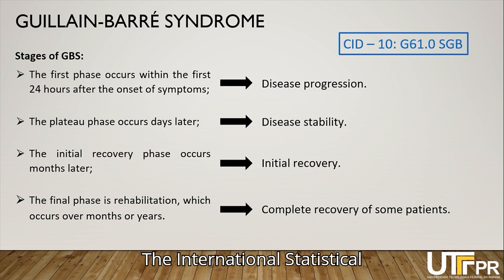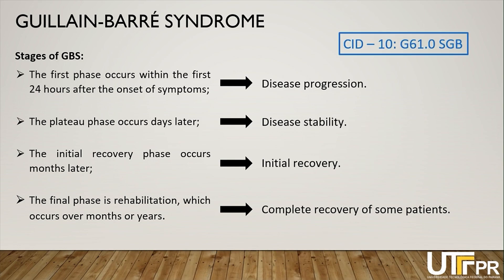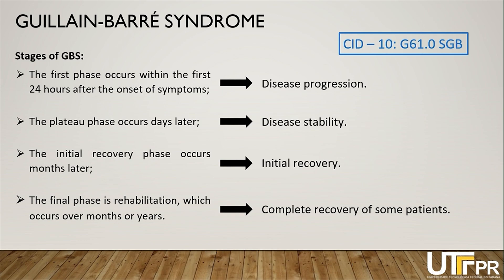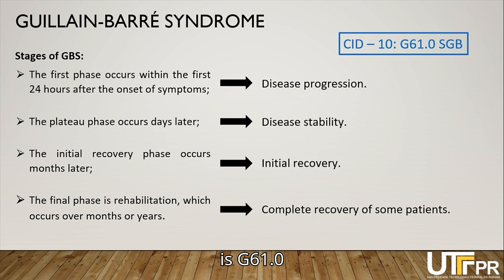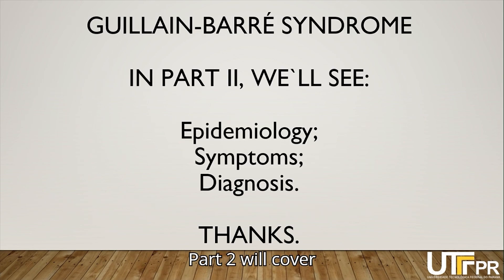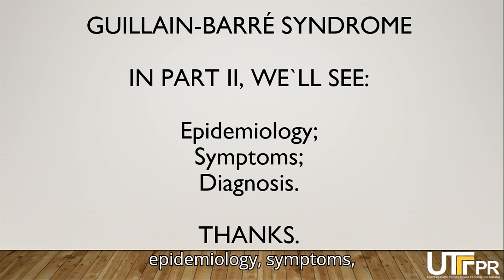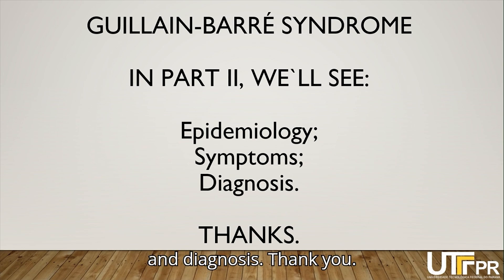The International Statistical Classification of Diseases and Related Health Problems, ICD-10, code for Guillabar Syndrome is G61.0 Guillabar Syndrome. Part 2 will cover epidemiology, symptoms, and diagnosis.